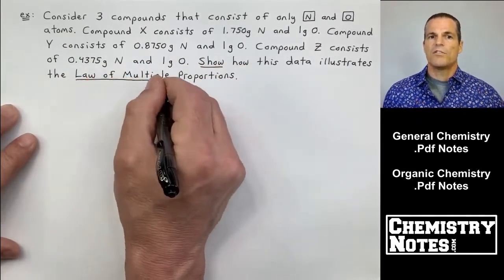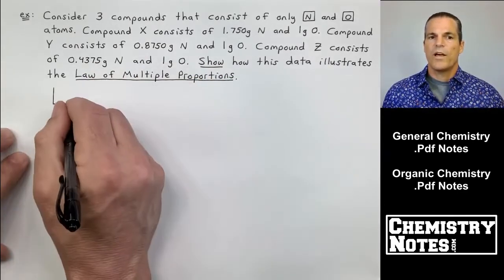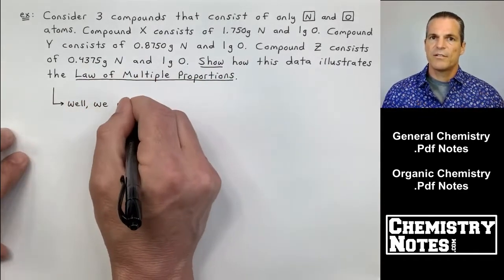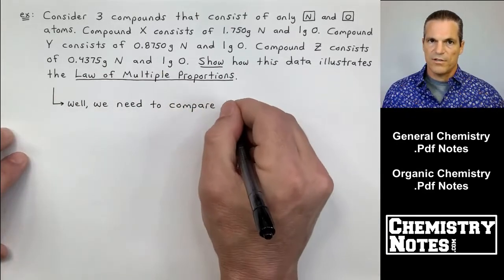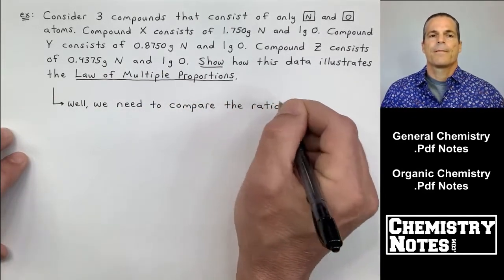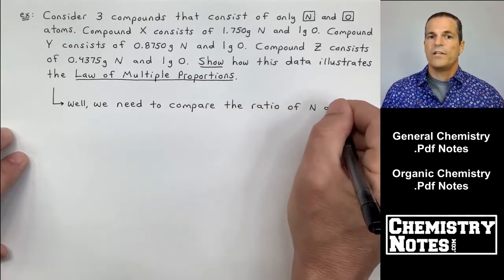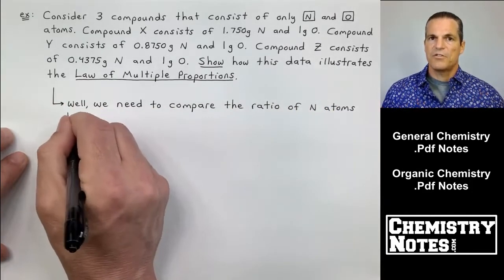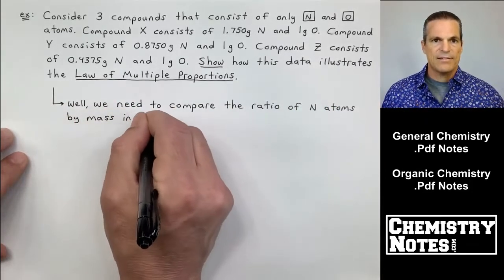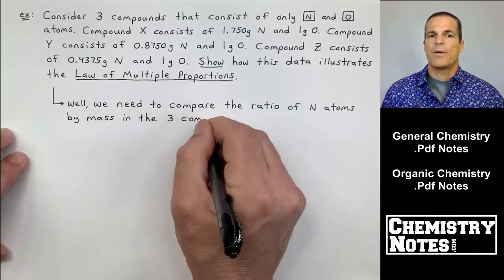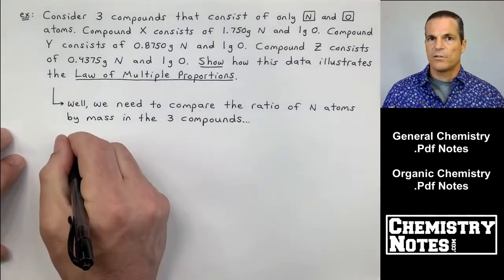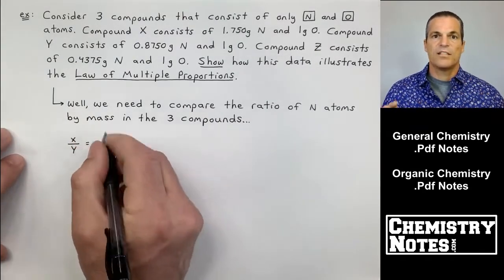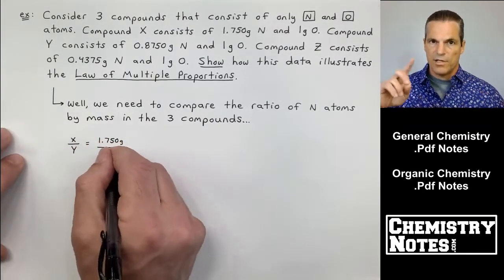Our objective is to show how this data illustrates the law of multiple proportions. Well, if we want to show the law of multiple proportions, we have to show that the nitrogens are all in whole number ratios to each other. So it says, well, we need to compare the ratio of nitrogen atoms by mass in the three compounds, X, Y, and Z. The oxygen is kind of like the placeholder. It's kind of like the C was in CO and CO2 in our previous example.